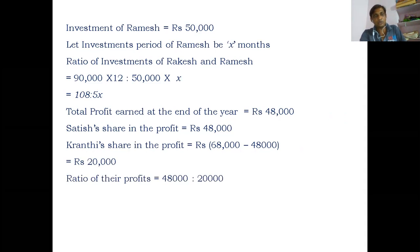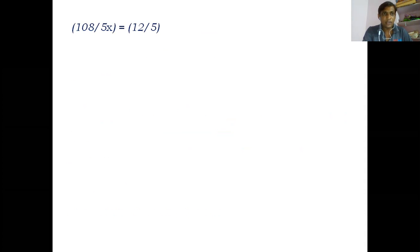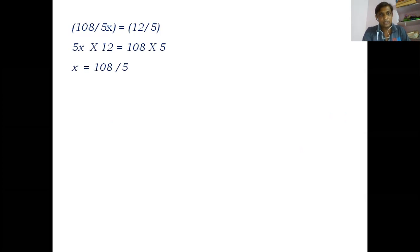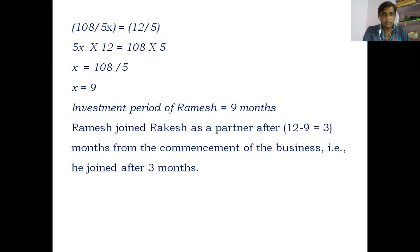Since ratio of investments equals ratio of profits: 108 : 5X = 12 : 5. So 108/5X = 12/5. After cross multiplication: 5X × 12 = 108 × 5, giving X = 108/12 = 9. The investment period of Ramesh is 9 months. Therefore, Ramesh joined Rakesh as a partner after 12 − 9 = 3 months. So Ramesh joined the business after 3 months.